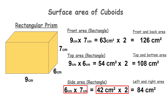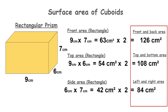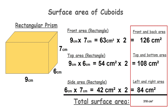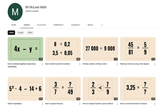When we add the area of all 6 sides of the rectangular prism, we get a total surface area of 318 centimeters squared. So the surface area of the rectangular prism is 318 centimeters squared. This is how we calculate the surface area of cuboids.